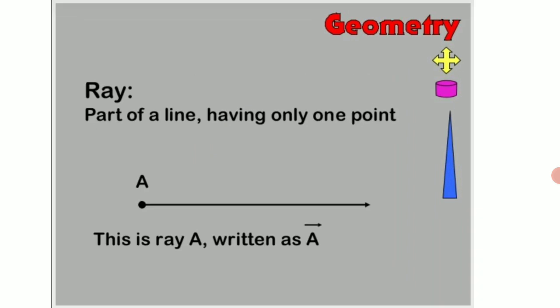Now let us come to what a ray is. A ray is a part of a line having only one point. You can see the given picture here children, the given diagram which is showing only one end point and that is named as A. This is ray A written as A with a bar on the top with only a single arrow head.